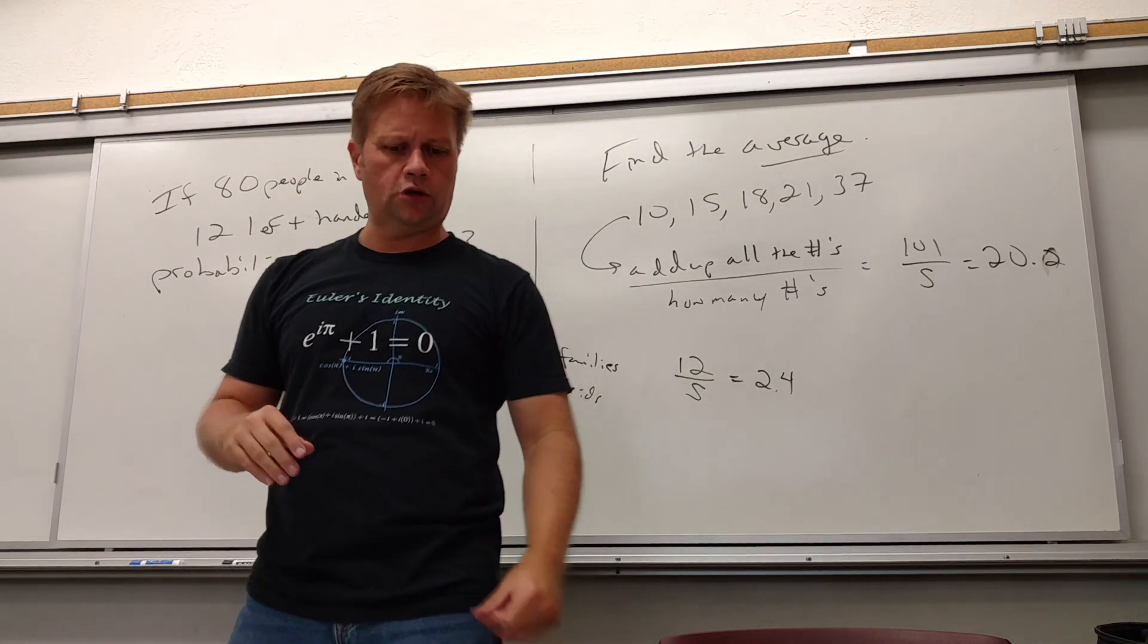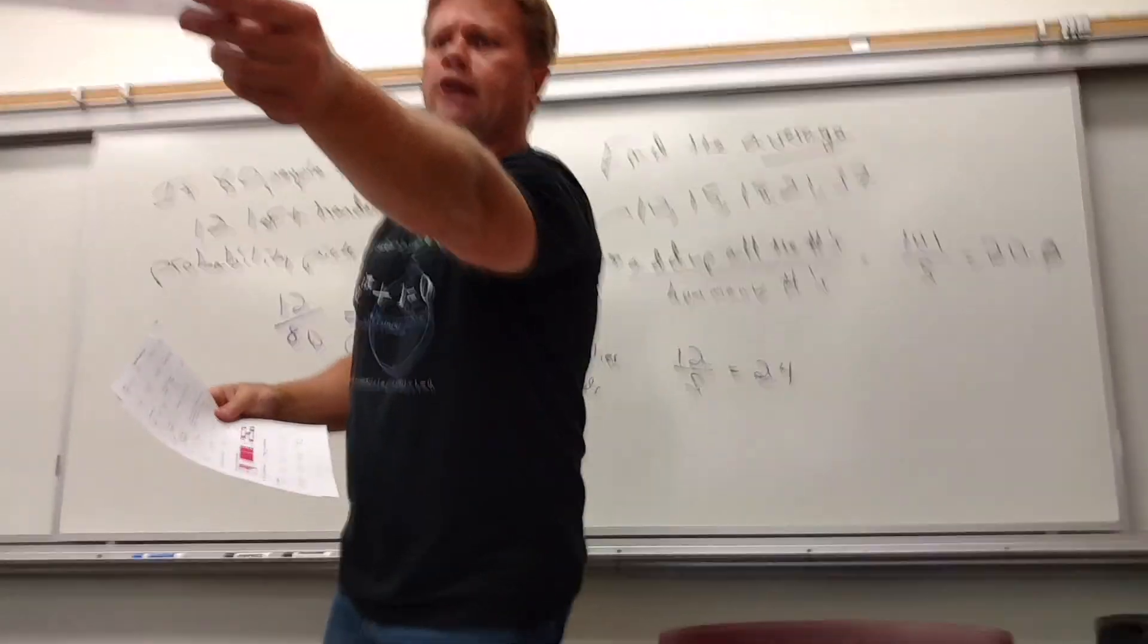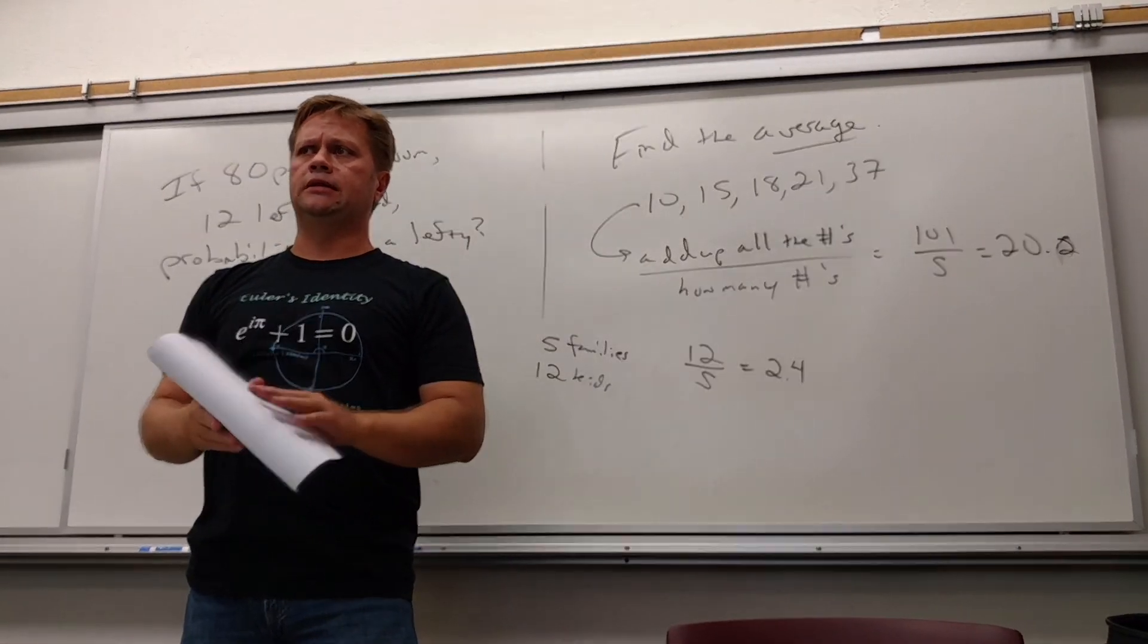All right, so that's that last section, I think it was 5.5, right? 5.5 is about averages and probability. Those are applications of decimals. Okay. Everybody got a copy of the practice test, right? So I'll have the answers for that Tuesday. Otherwise, we are done for the day.